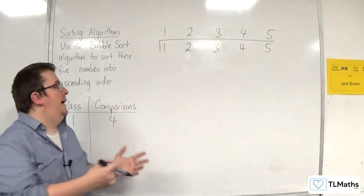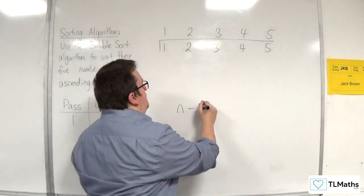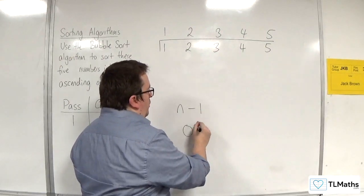So that means that the total number of comparisons being n minus 1, that is order of n.